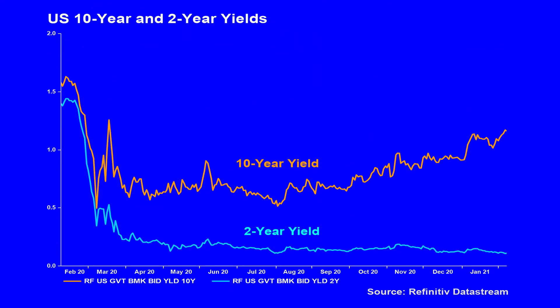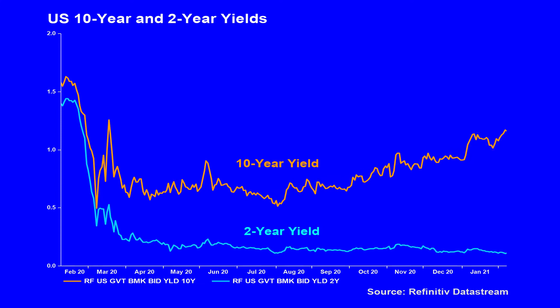However, during the current re-steepening, it's the reverse that's been in play. It's been a rise in the yield of the 10-year, called a bear steepening, that has led to the steepening of the curve.